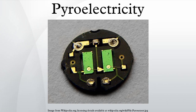Research in pyroelectricity became more sophisticated in the 19th century. In 1824, Sir David Brewster gave the effect the name it has today. Both William Thompson in 1878 and Waldemar Voigt in 1897 helped develop a theory for the processes behind pyroelectricity. Pierre Curie and his brother Jacques Curie studied pyroelectricity in the 1880s, leading to their discovery of some of the mechanisms behind piezoelectricity.